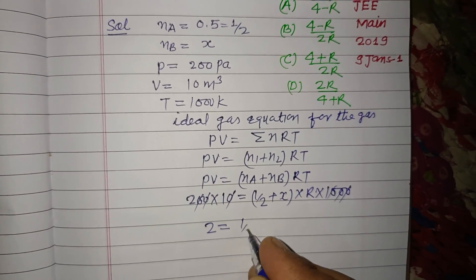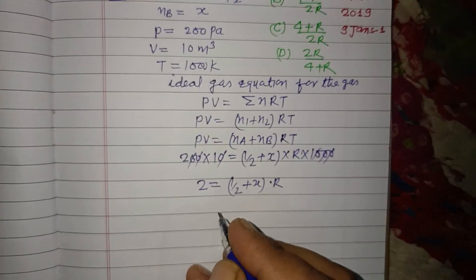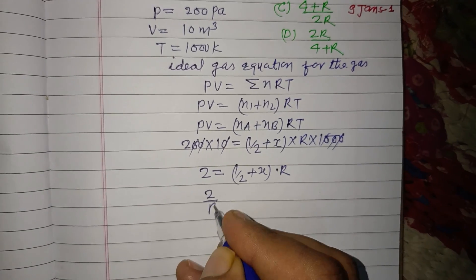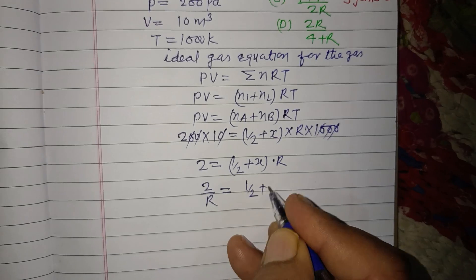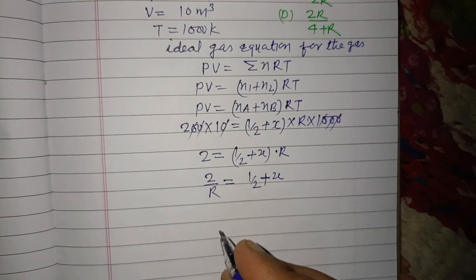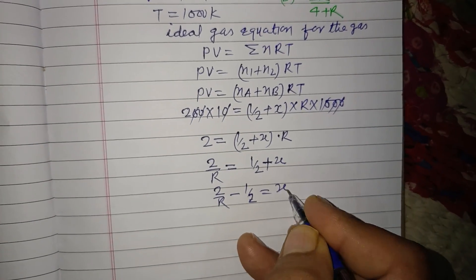Here we got 2 equals (1/2 plus x) into R. We divide by R, so 2/R equals 1/2 plus x, therefore 2/R minus 1/2 equals x.